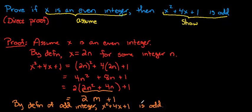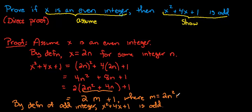This looks really good. The only thing we might want to tidy up is to define what m is. So we could add a clause where m is equal to 2n squared plus 4n — clearly an integer, because n was an integer and the integers are closed under addition and multiplication.